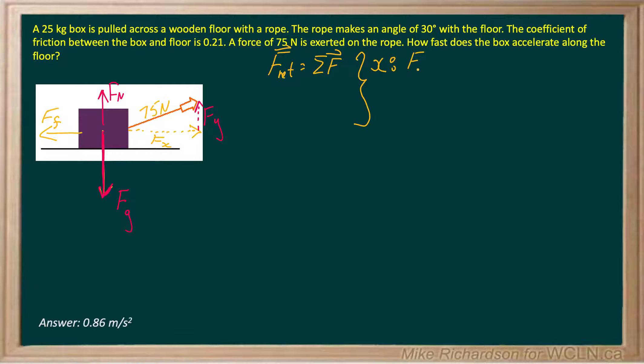So horizontally, I've got F net in the x will be the sum of the forces in the x. And then vertically, I also have the same equation. F net in the y will be the sum of the forces acting in the y direction.